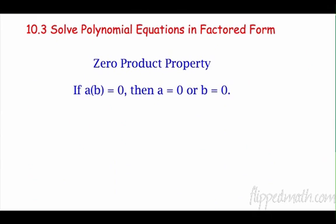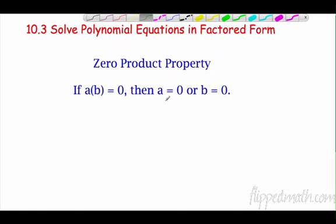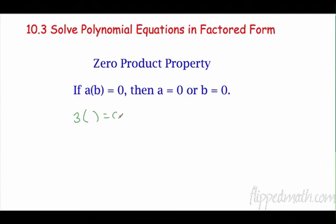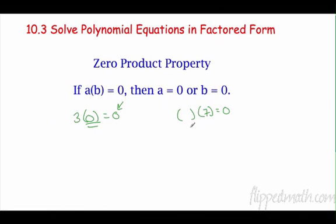The first thing we need to understand is how to solve them using the zero product property. It says: if a times b equals 0, then either a is 0 or b is 0. For example, 3 times something equals 0 — the only thing you can multiply 3 by to get 0 is 0. Likewise, what times 7 equals 0? Only 0.